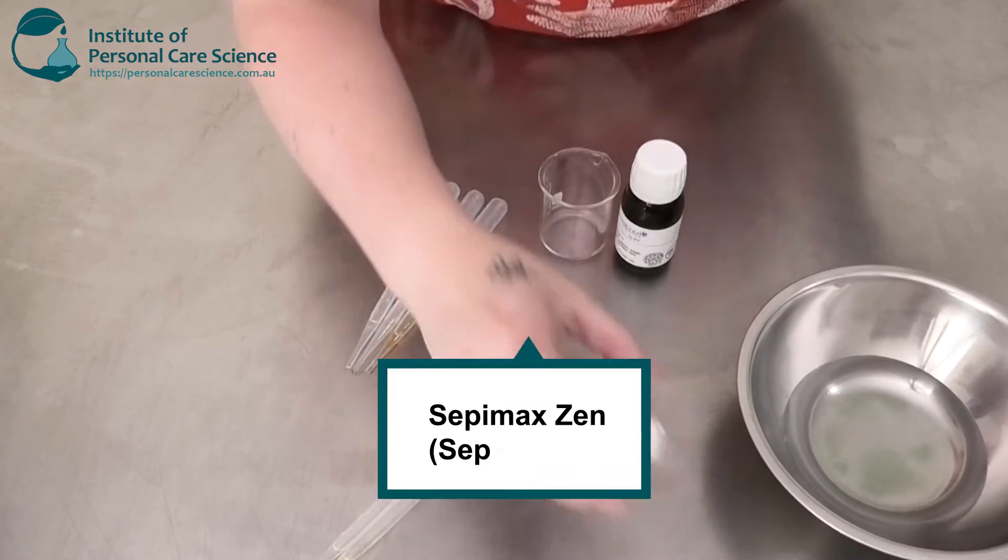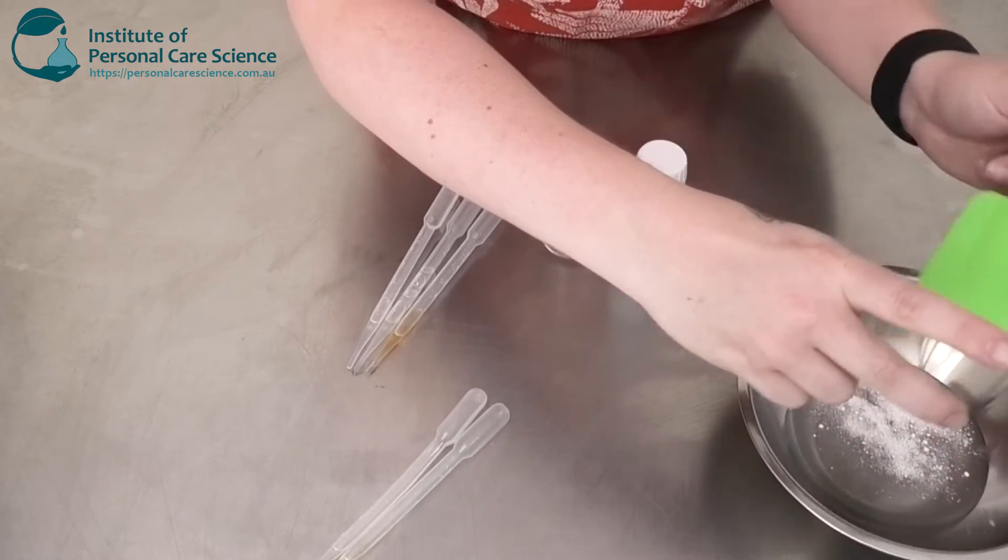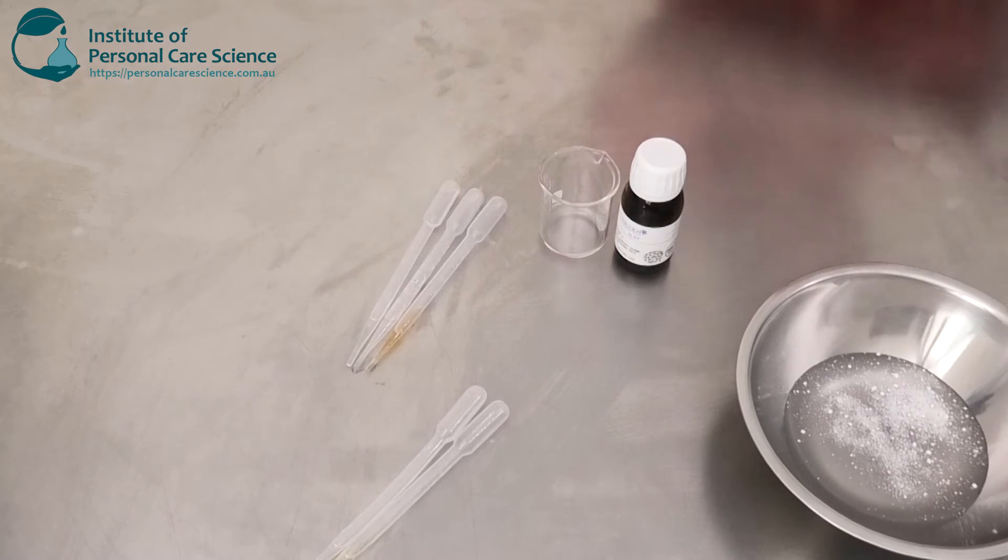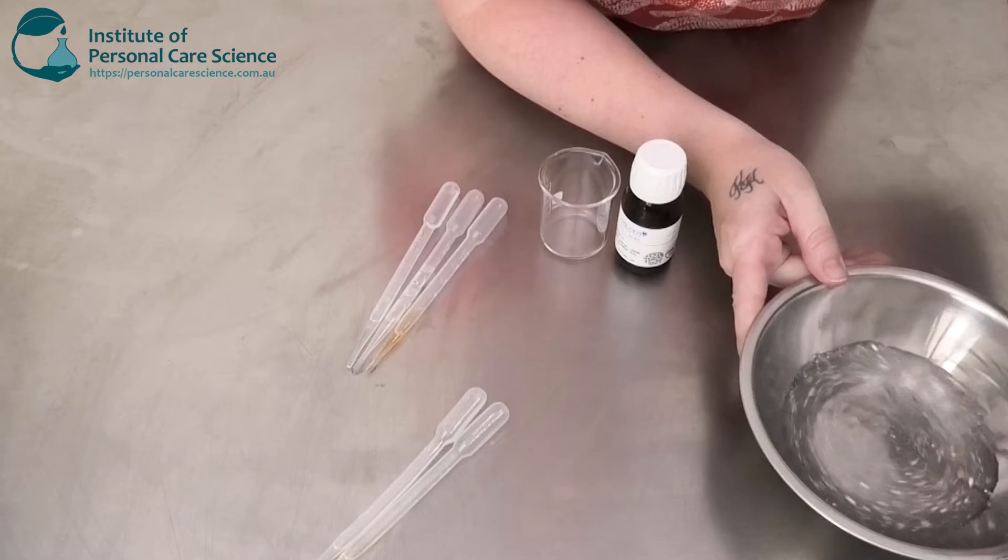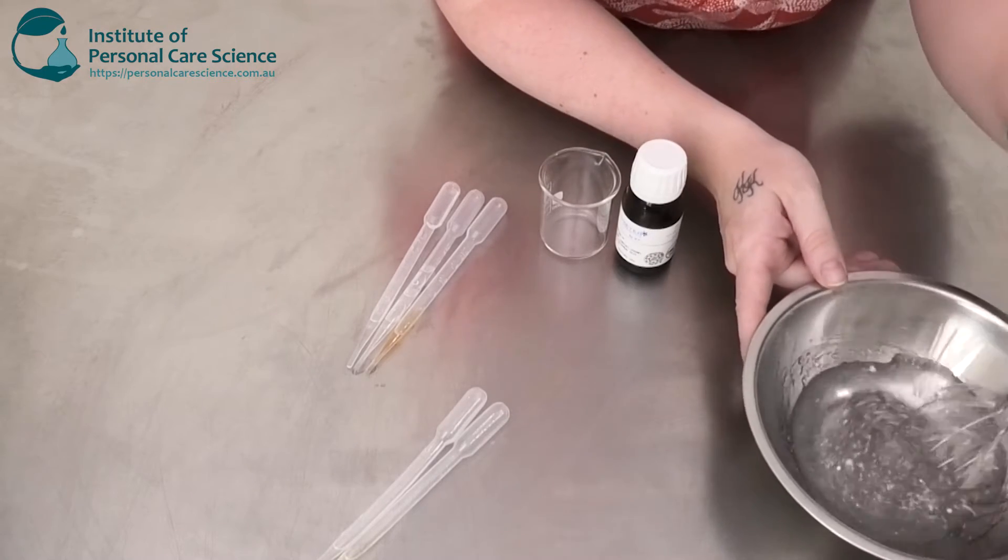Now to bring my serum together I'm going to be using some Sepi Max Zen. This will not hydrate straight away. It will need a bit of time possibly overnight. So we are going to give it a stir to wet the polymer and disperse it and then we're going to cover it up and come back to it a bit later.